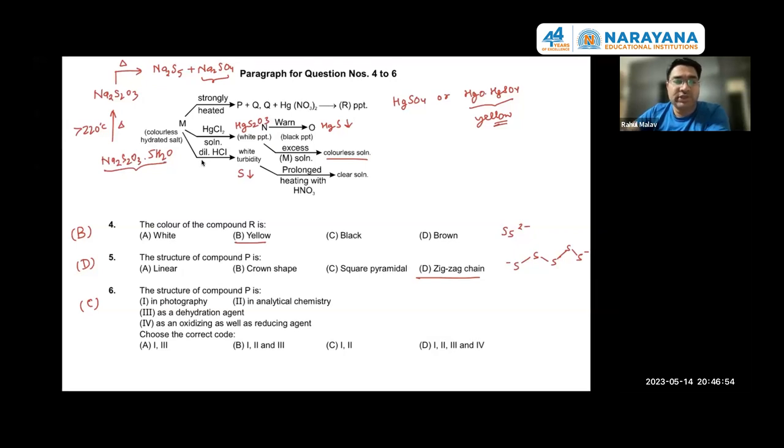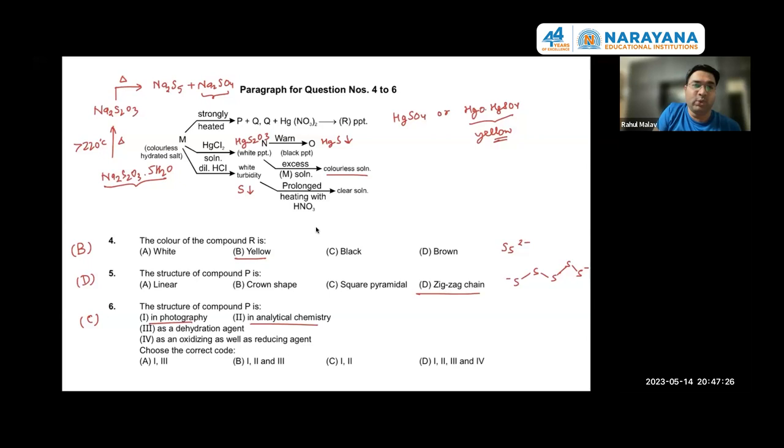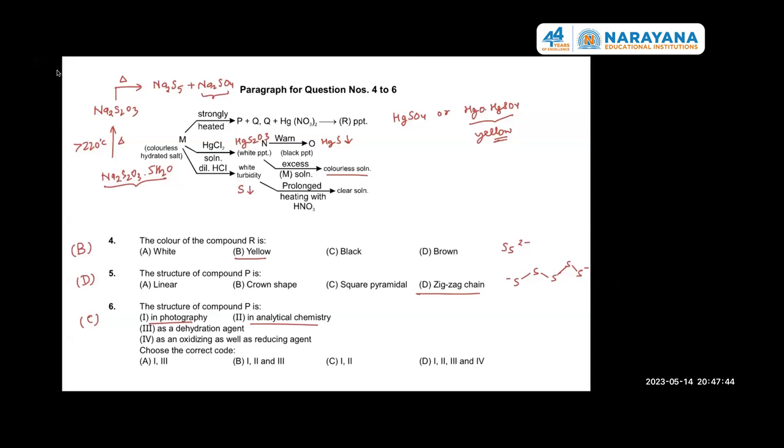The structure of compound P - it is used in photography to remove excess of HgBr, used in analytical chemistry as a hypo solution. It is also a dehydrating agent because it is taking water of crystallization when it is anhydrous. It can act as oxidizing as well as reducing agent. So what statements are actually correct in this situation of question 6? It is used in photography, analytical chemistry. Basically it is hygroscopic in nature, we can say not actually dehydrating agent. So these two statements are correct. Any doubt here? Any problem in this portion? How we came to the conclusion that we are having a thiosulfate? That is fine.